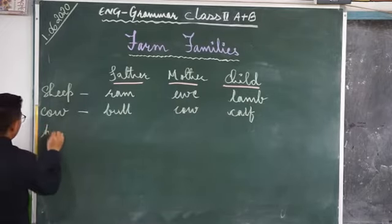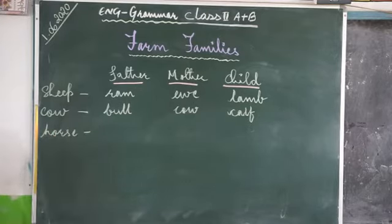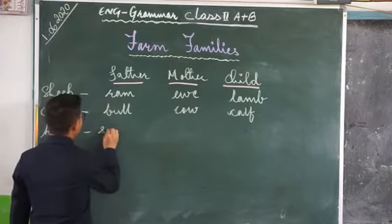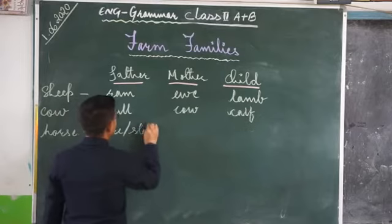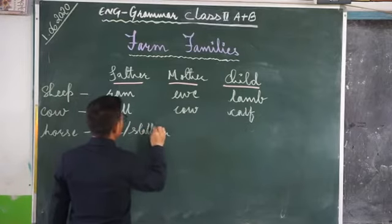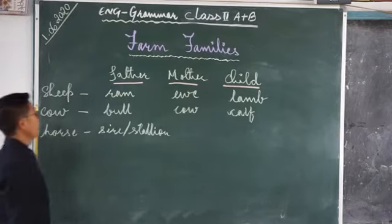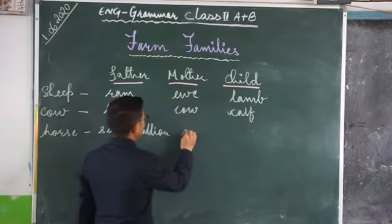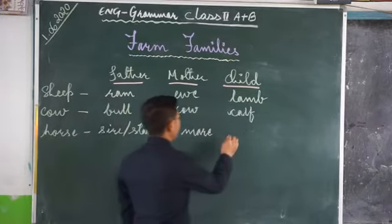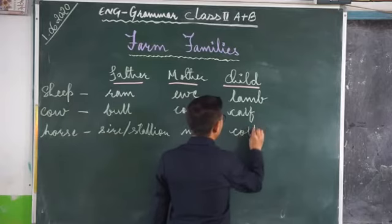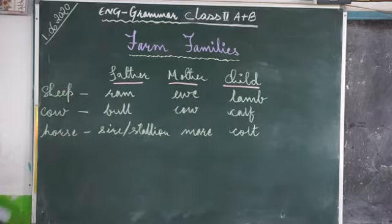Next is horse. In the horse family, the father is called sire or stallion — you can call either sire or stallion. And the mother is called mare. And the child of the horse family is called colt.